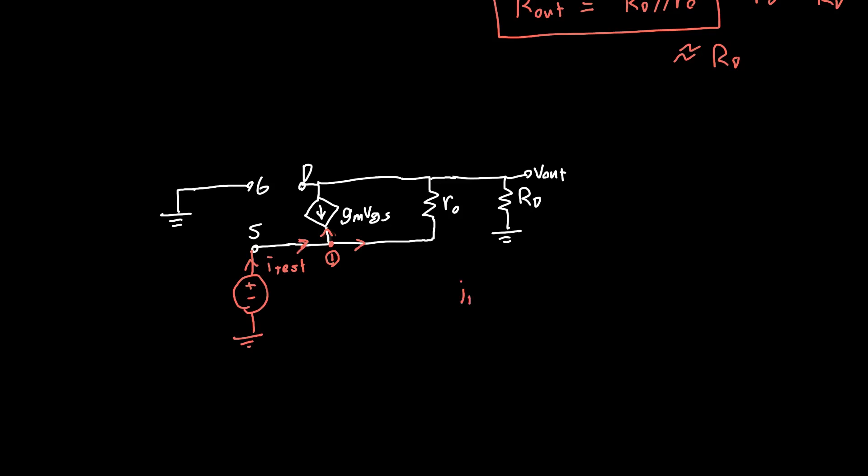Certainly uglier than the last couple circuits, because we've got two equations that we're going to have to deal with. Let's first apply KCL at this node. We know that the current flowing in must equal the current flowing out. I test must equal the current flowing into this current source, which is minus GM VGS, plus the current flowing into this resistor, which is just the voltage drop across it.